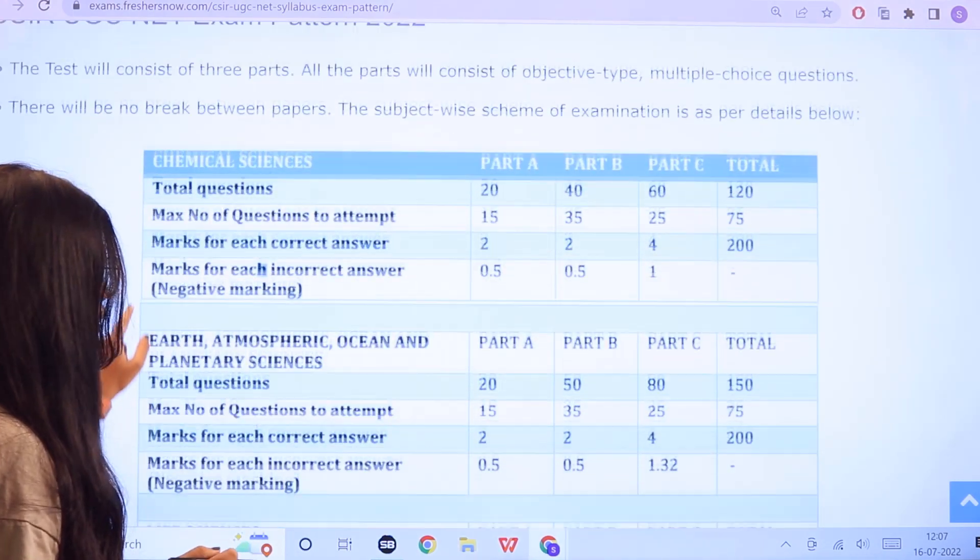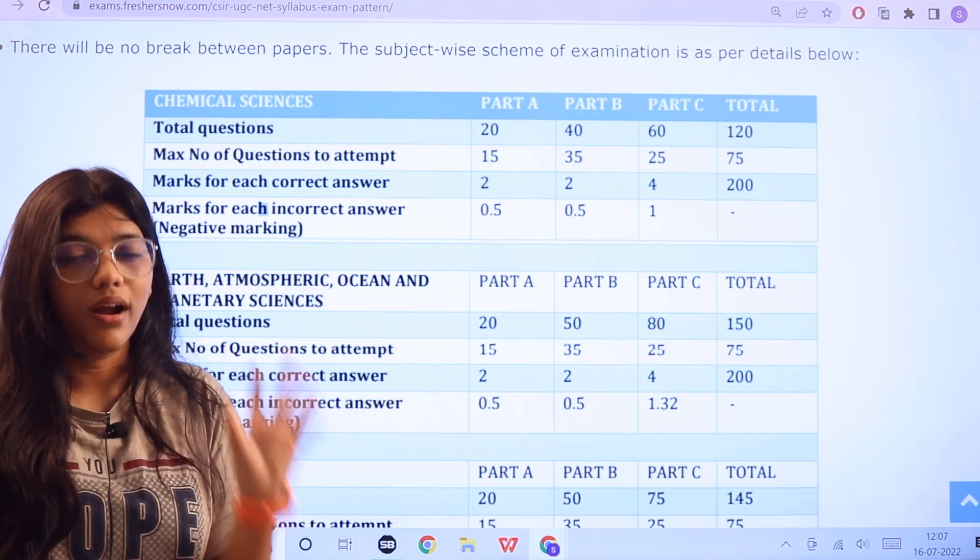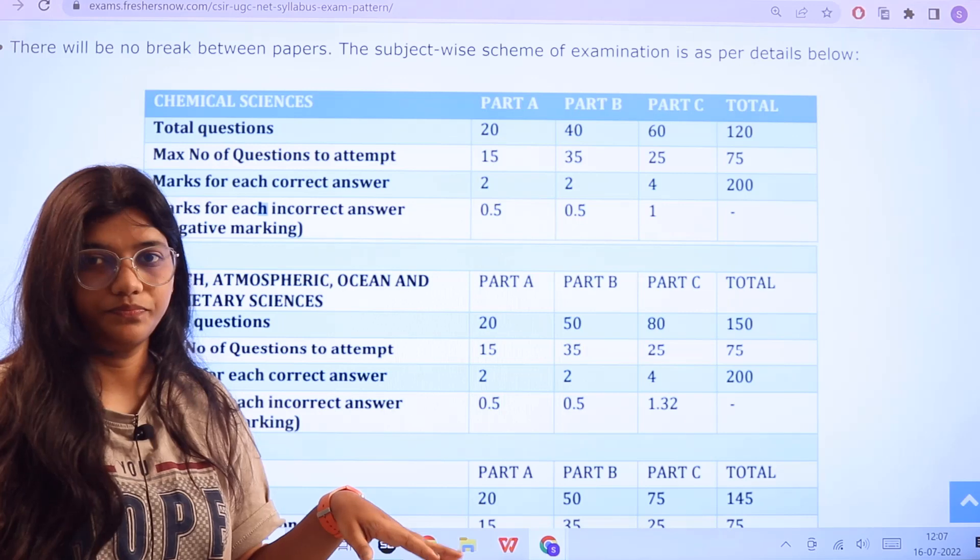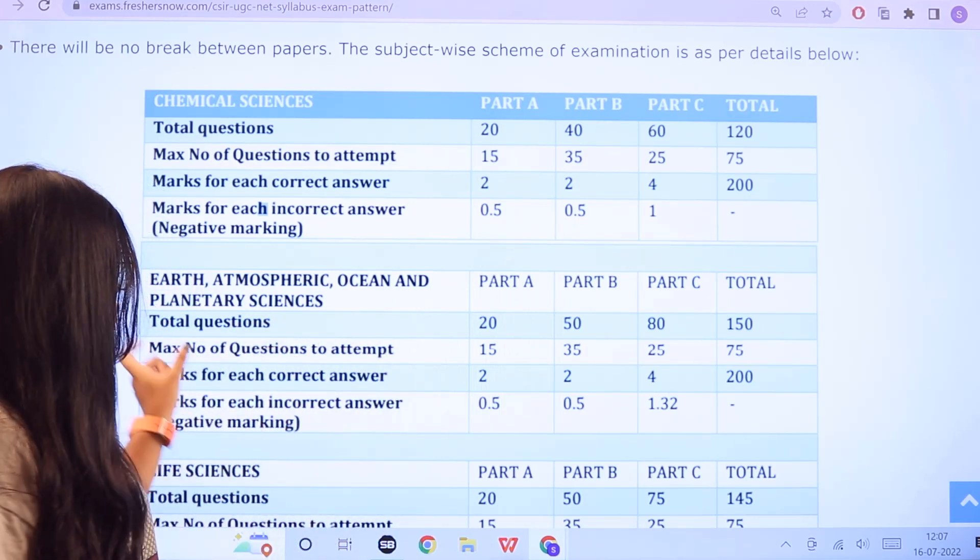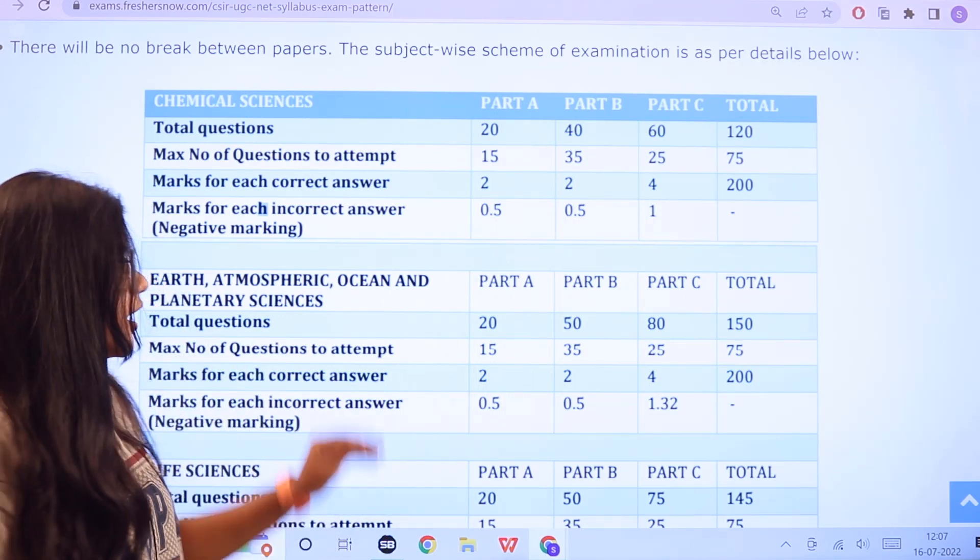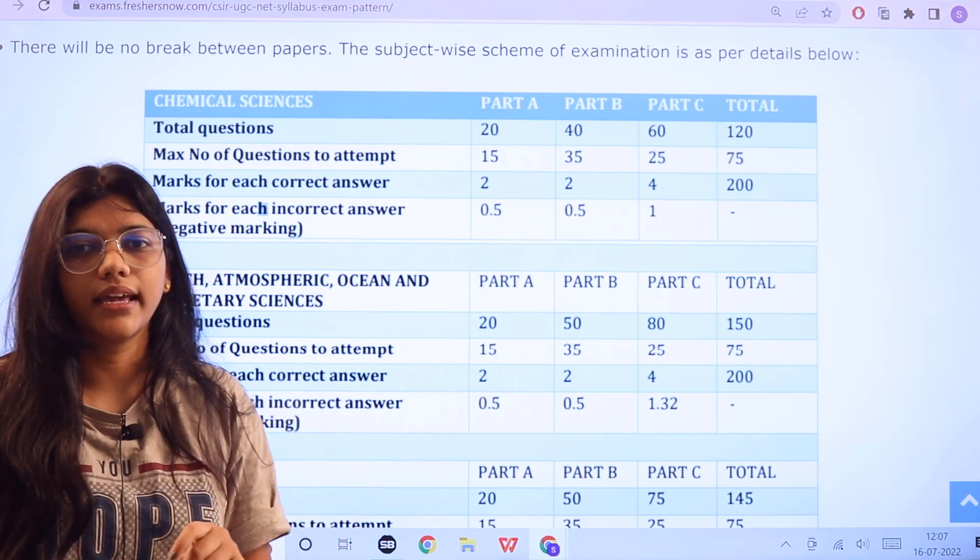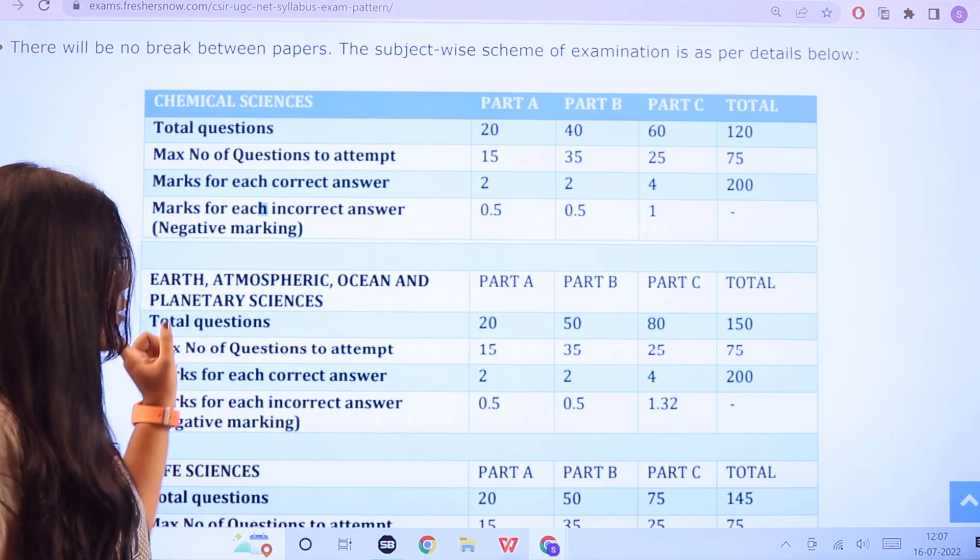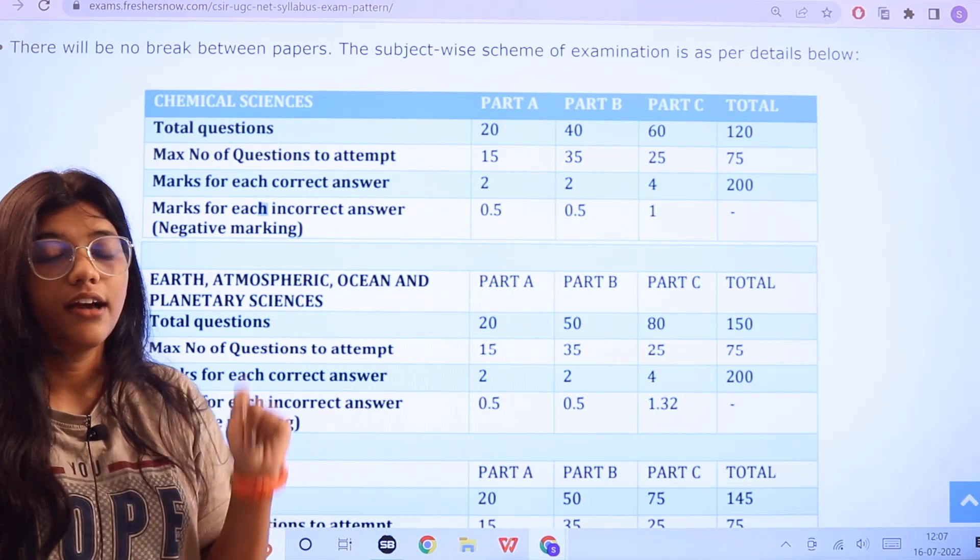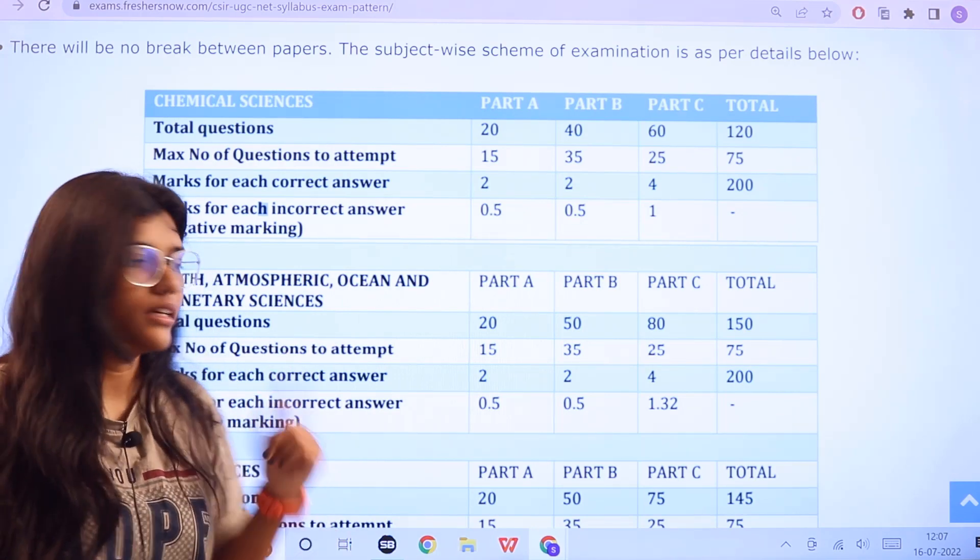Next, for Earth, Atmosphere, Ocean and Planetary Sciences, there will be again 3 parts with a total of 150 questions. For part A are 20, part B are 50, part C is 80. The maximum number of questions that you need to attempt are 75 and the marking scheme is for 200. For every correct answer you would be awarded 2 marks in part A and part B, for part C 4 marks would be awarded. For negative marking, 0.5 in part A and part B, 1.32 marks would be deducted for every wrong answer.